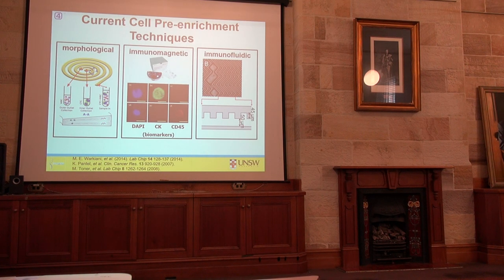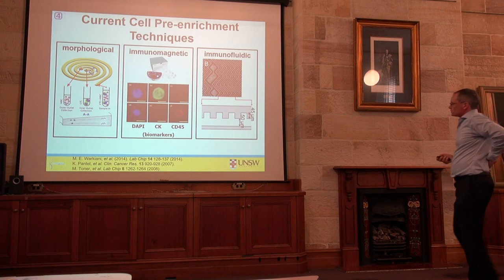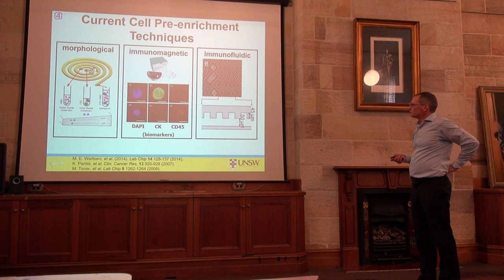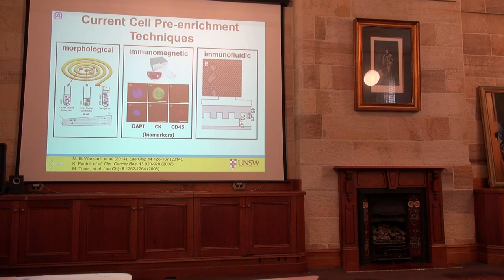You're talking about one cell in one to ten millilitres — one in a billion cells. But if you can count them, you can actually see how someone's responding to treatment, or maybe see where the secondary cancer is coming about. And if you could target them therapeutically, obviously that would be brilliant. There's a range of technologies that have been doing this for quite a number of years to count them, and they're based on really two things.